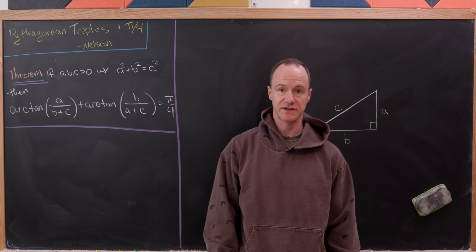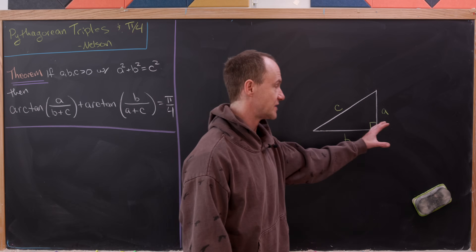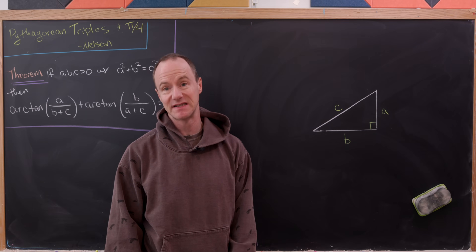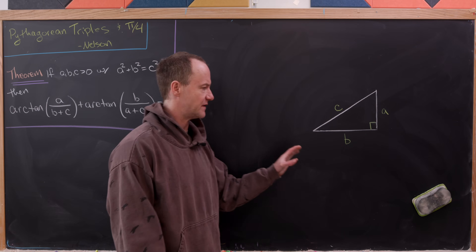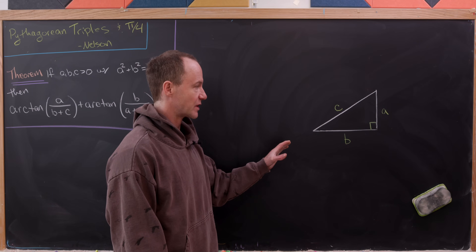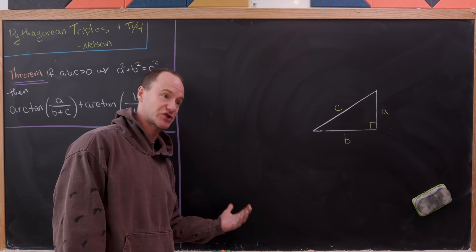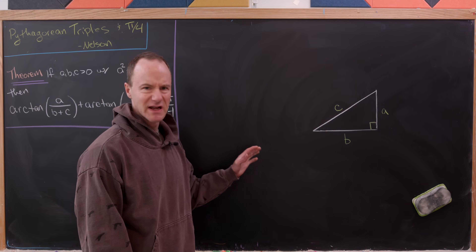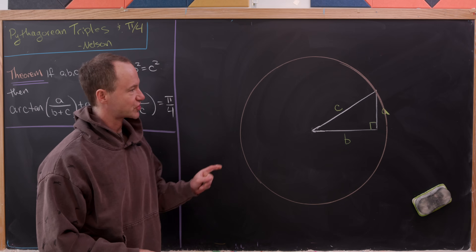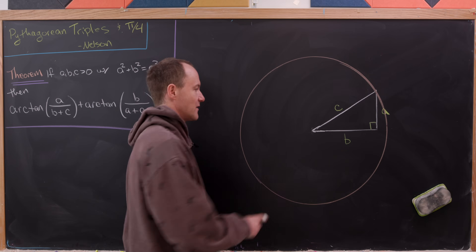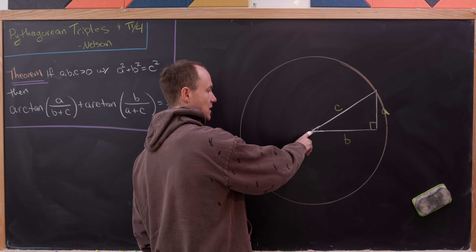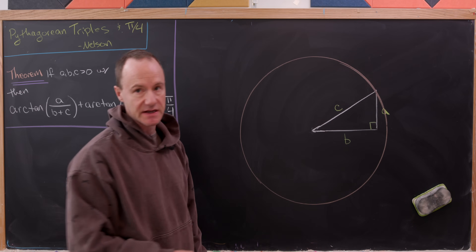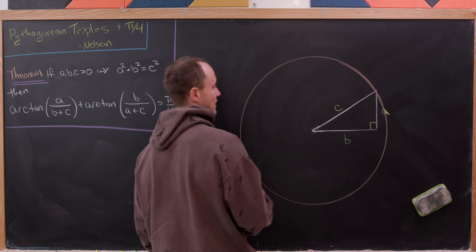The way we'll prove this result is to take a right triangle with side lengths a, b, and hypotenuse c and work off of this. The first thing we're going to do is put this triangle inside a circle of radius c. The vertex where sides of length b and c intersect is the center of our circle.